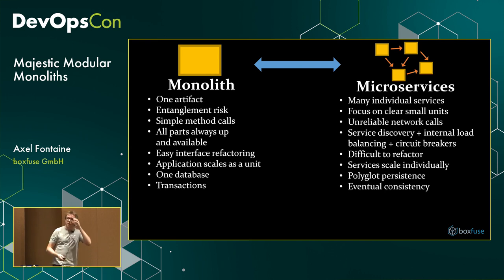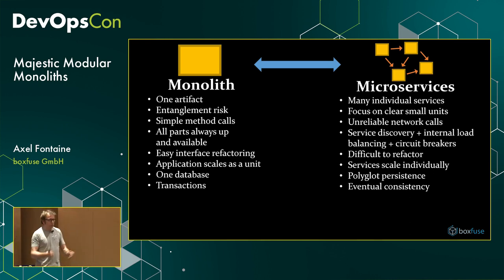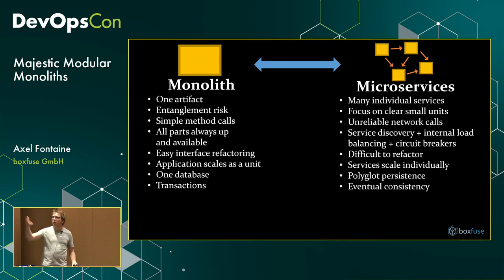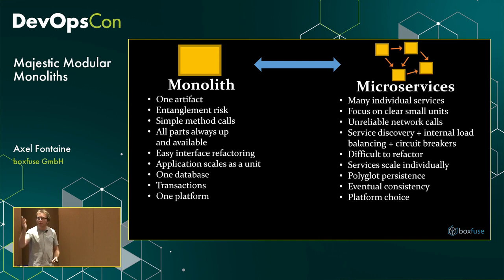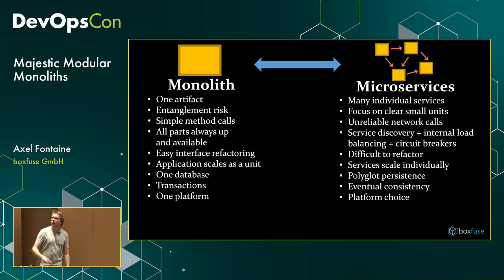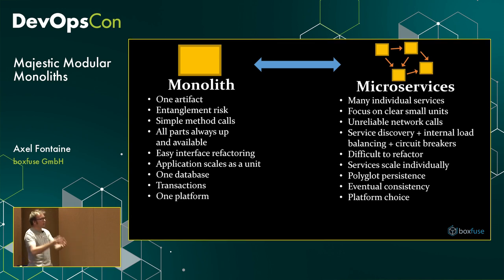The big advantage of one database is transactions, which guarantee consistency — not eventually, but right now — and referential integrity. On the microservices side, much of what the database offered for free must be reimplemented in code with eventual consistency. The monolith runs on a single technical platform by definition; microservices let you choose whatever is the best fit per service — Node, JVM, anything — as long as they communicate through a clear API.